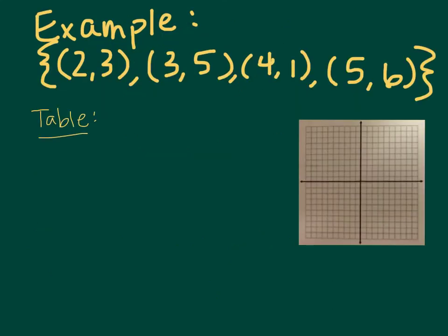Then the last thing we're going to look at is an example. So if this was my example of my relation: 2, 3, 3, 5, 4, 1, and 5, 6.